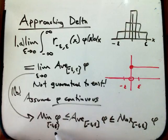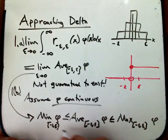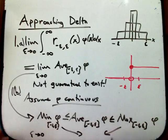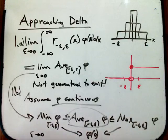It's just that the average is between the min and the max of this function. And these min and max will actually exist because it's a continuous function and this is a closed bounded interval. And as epsilon goes to 0, then these are going to squeeze down to phi of 0, and therefore that's going to squeeze to phi of 0. It's going to limit to phi of 0.